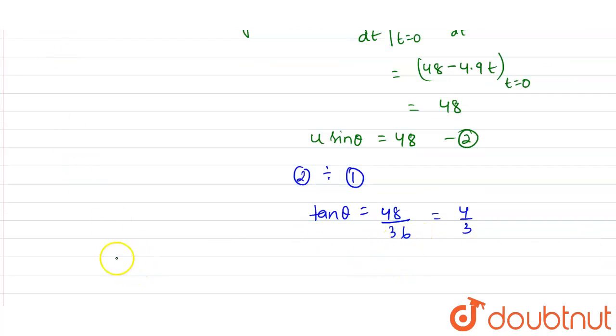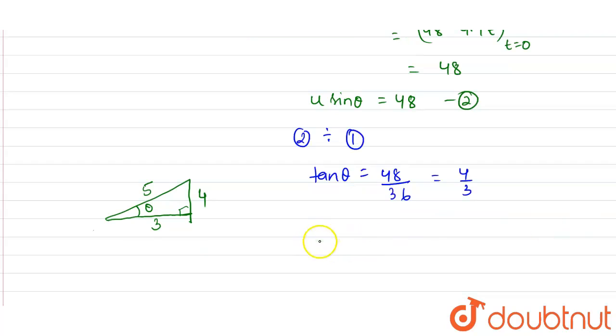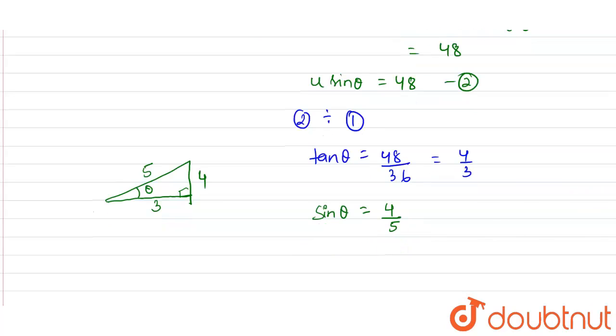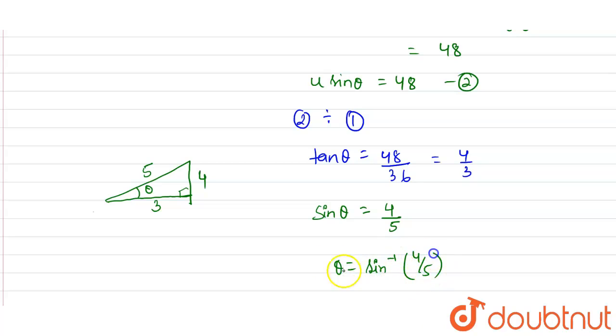Let us suppose we have a triangle with angle θ, where this side is 4, this side is 3, so tan θ is perpendicular by base, that is 4 by 3. From Pythagoras theorem, we can find the hypotenuse as 5. From here we can find sin θ as perpendicular by hypotenuse, that is 4 by 5. So θ will come out as sin inverse 4 by 5.